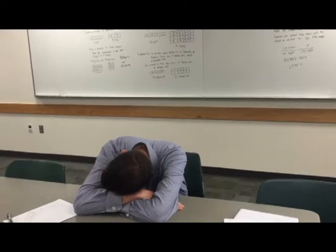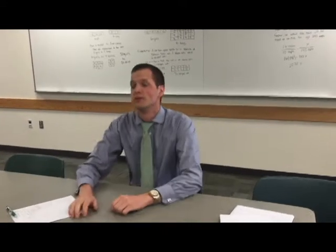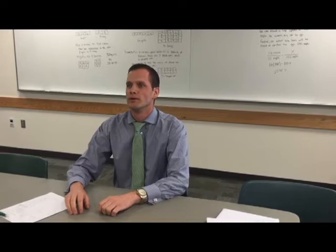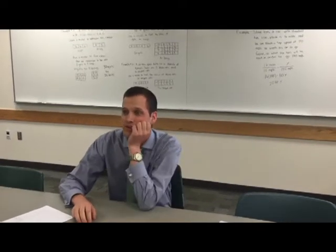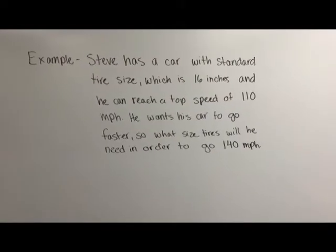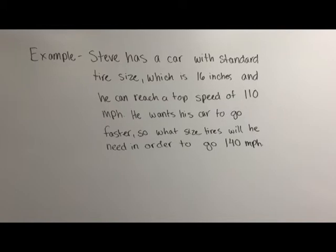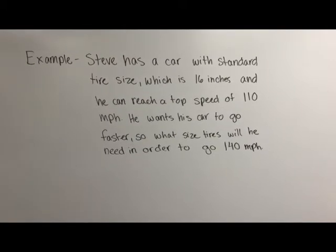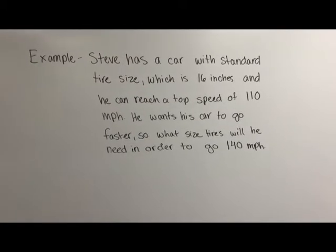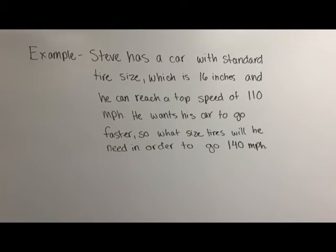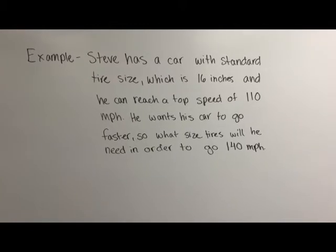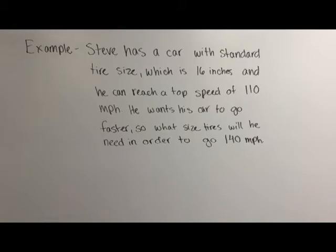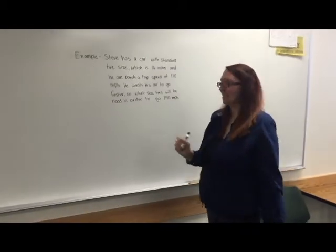Alright, for this next example — Justin, I wrote an example using cars. Could you please read it off the board? Oh, you got an example with cars? Okay. Steve has a car with standard tire size, which is 16 inches, and he can reach a top speed of 110 miles an hour. He wants his car to go faster. So what size tires will he need in order to go 140 miles an hour? Thank you, Justin, for reading that.